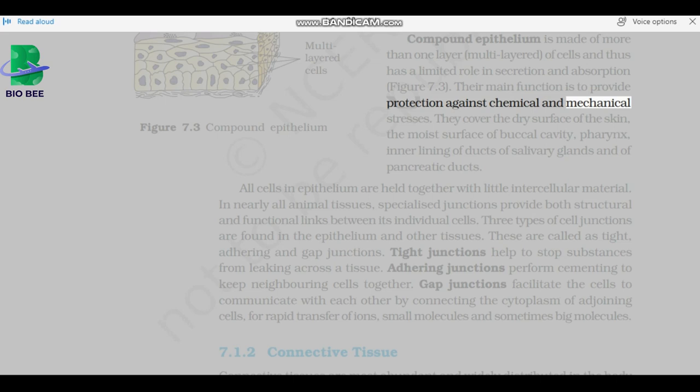They cover the dry surface of the skin, the moist surface of buccal cavity, pharynx, inner lining of ducts of salivary glands and of pancreatic ducts. Epithelia are held together with little intercellular material. In nearly all animal tissues, specialized junctions provide both structural and functional links between its individual cells. Three types of cell junctions are found in the epithelium and other tissues. These are called as tight, adhering, and gap junctions.